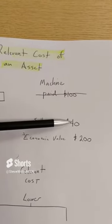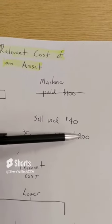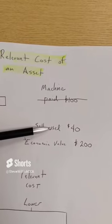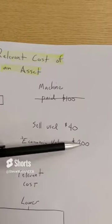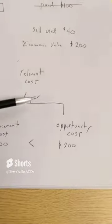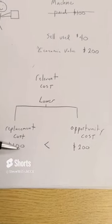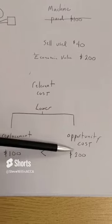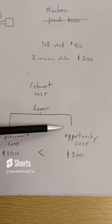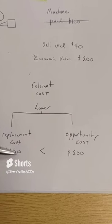I could sell it for $40, or I could earn $200 contribution this summer. The higher of these numbers is what it's worth to me now. Once I understand that, I can determine the relevant cost. That'll be the lower of buying a new one — replacing it — or the opportunity cost of earning more contributions. So I would go with buying a new one, replacing it.